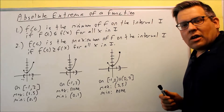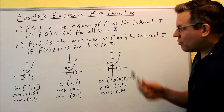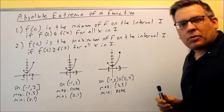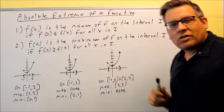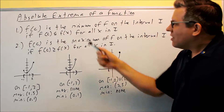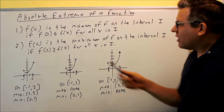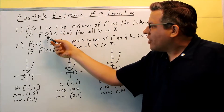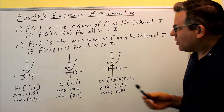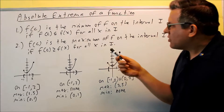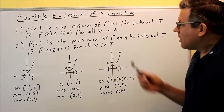Absolute extrema is talking about the absolute highest or lowest y value on an interval. We're going to let c represent a number that is in the interval. The y value at c is going to be considered the absolute minimum of f on that interval if the y value at c is less than or equal to any other y values on that interval. If that occurs, that y value is the absolute minimum on the interval.